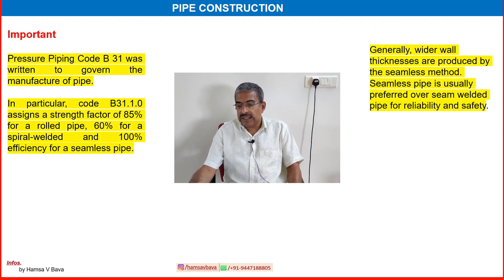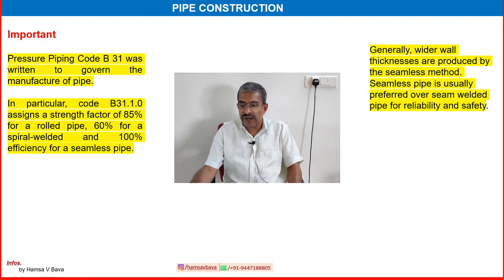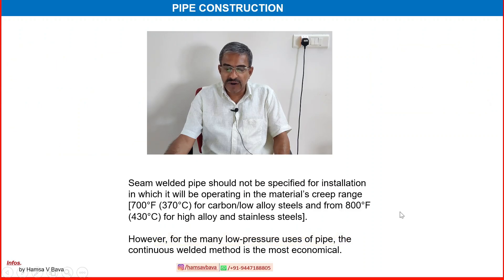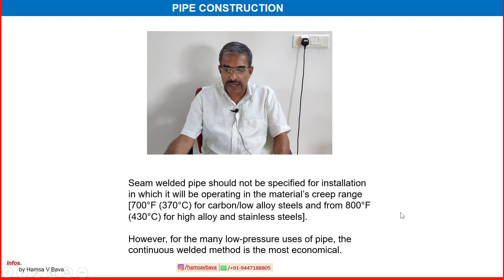Generally, wider wall thicknesses are produced by the seamless method. Seamless pipe is usually preferred over seam-welded pipe for reliability and safety. Seamless pipe cannot be substituted for others; only electric resistance welding and SAW seamless pipe can be substituted. Seam-welded pipe should not be specified for installations operating in the material's creep range: 700°F for carbon or low-alloy steel and 800°F for high-alloy and stainless steel. For many low-pressure uses, the continuous welded method is most economical.